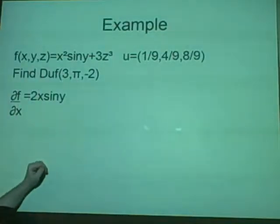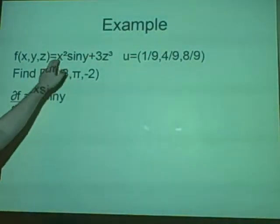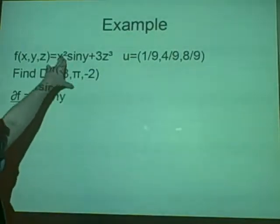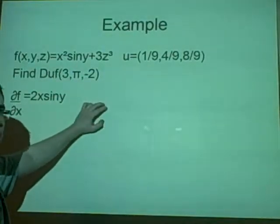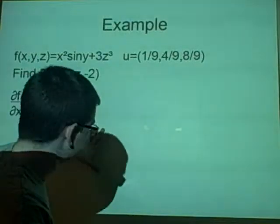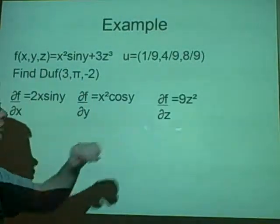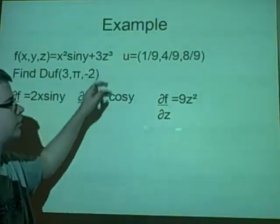This one here is 2x sin y, which is differentiating this, and for delta f delta y, which would be x squared cos y, and that one's 9z squared.